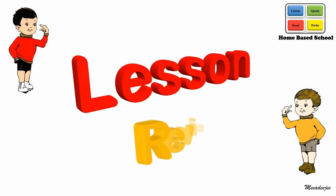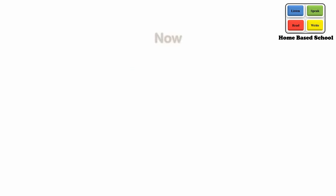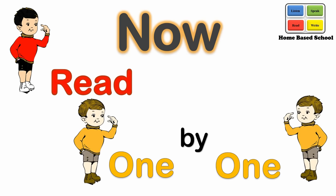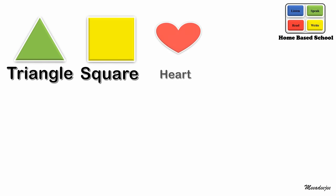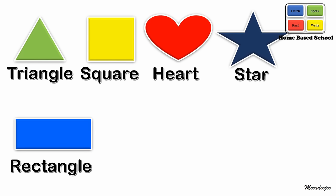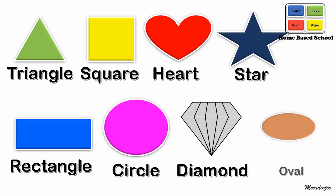Lesson Review. Now read one by one. Triangle, square, heart, star, rectangle, circle, diamond and oval.